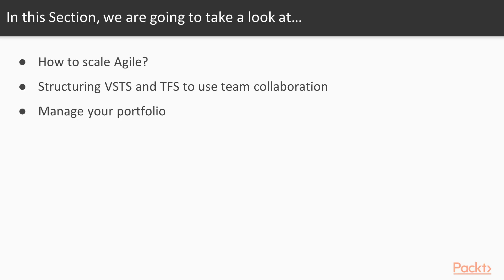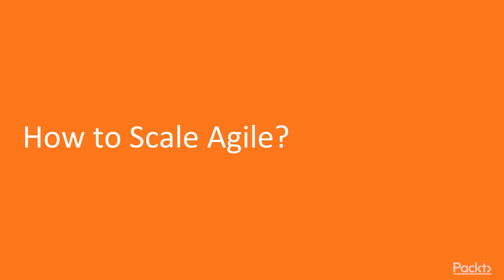In this section, we're going to have a look at how to scale Agile and some of the principles around that, whether that be DAD, SAFe, or LeSS. Then we're going to move on to structuring Visual Studio Team Services and TFS to use team collaboration, and finally managing your portfolio with the delivery plan new feature, scaling Agile using DevOps processes.